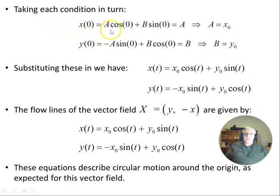Taking each in turn, x of 0 is A cos 0 plus B sin 0. Well, sine of 0 is 0. So we're left with A. So it implies A is x_0. y of 0 is minus A sin 0, which is 0, drops out. Cos of 0 is 1. So we're left with B. So B is y_0. So substituting these in, we have x of t.